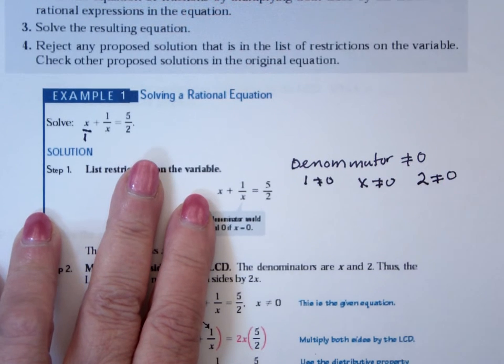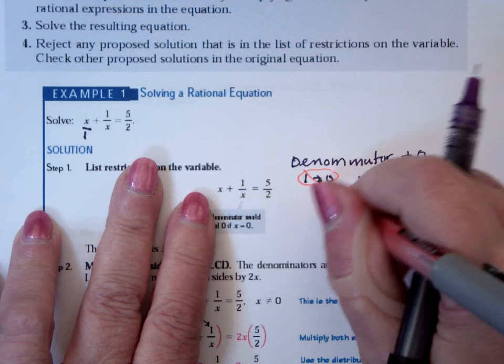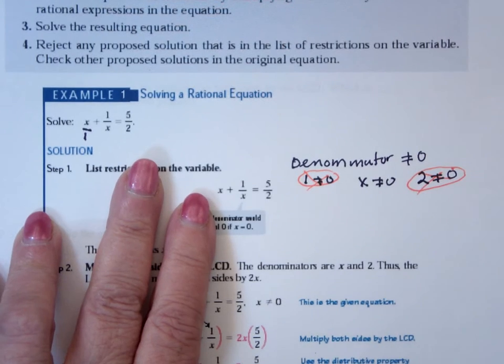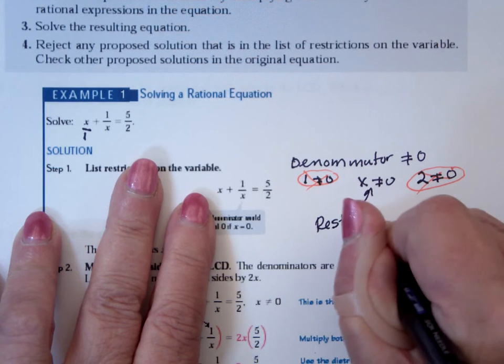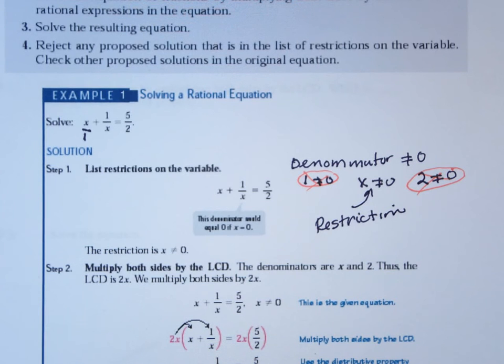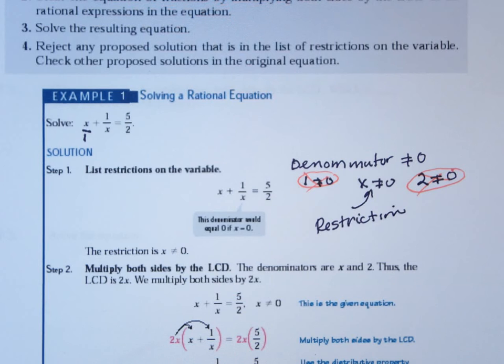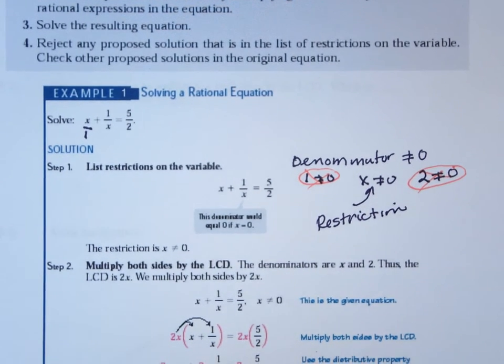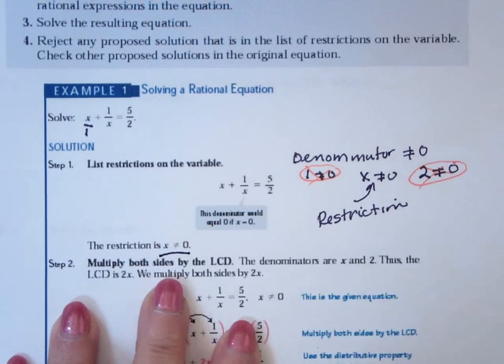Well, these two here, one is never zero, so that's not a problem. Two is never zero, so that's not a problem. So my restriction is x can't be zero. That means if I come out with a value of x equals zero, it gets tossed, because x can't be zero. Once you realize that x can't be zero, so that's my restriction, you multiply both sides by the LCD.